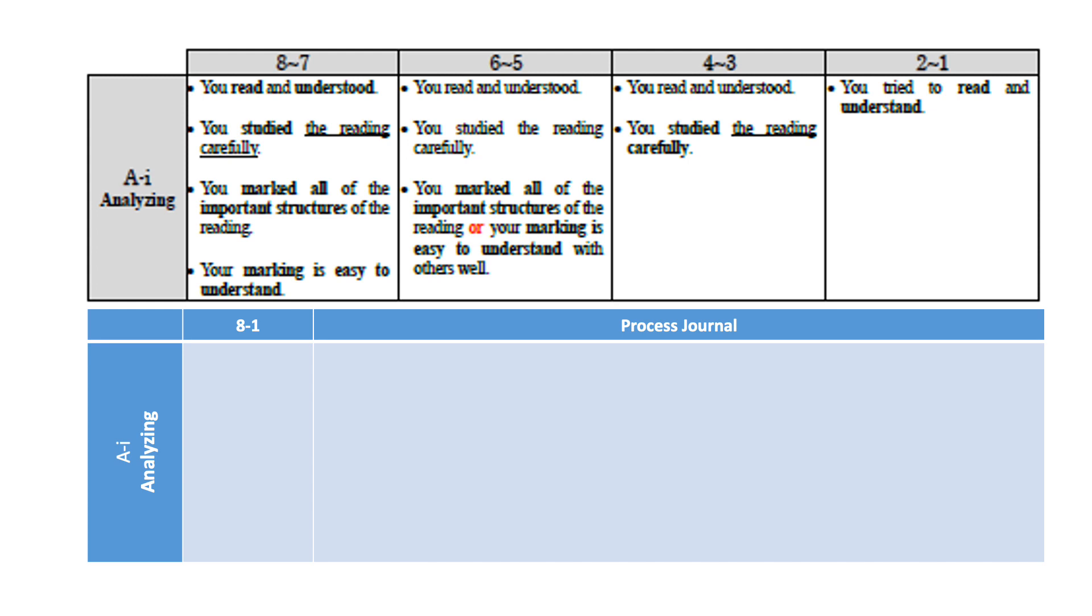I read and understood the texts. I studied the reading carefully. The third line says you marked all of the important structures of the reading. Yes, I made some notes and used different pens with different colors, but my marking was not easy to understand. So I think I got six points.